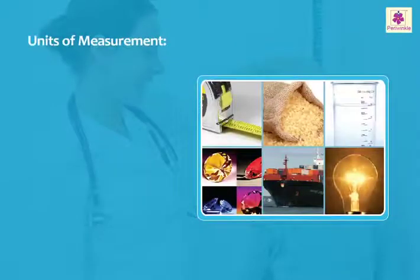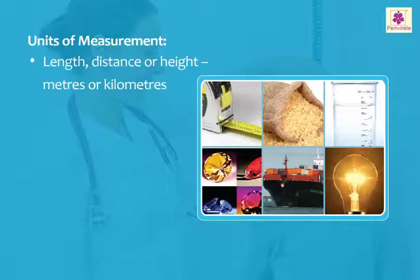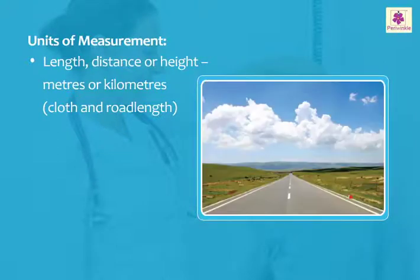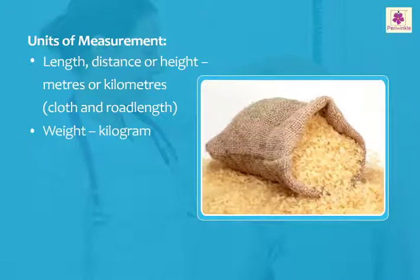Units of Measurement. Length, distance, or height is measured in meters or kilometers. For example, in the case of cloth and road length. Weight is measured in kilograms.